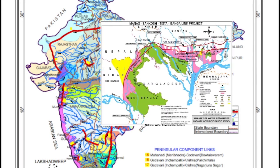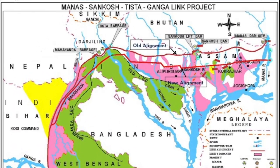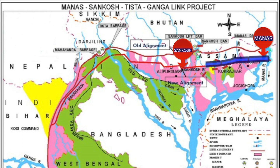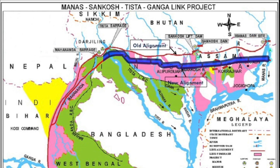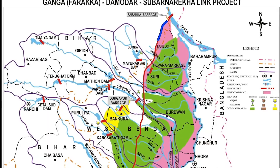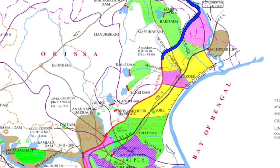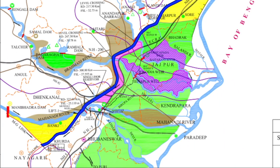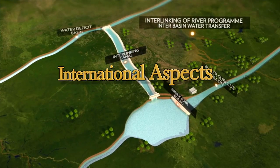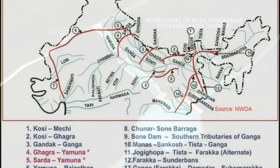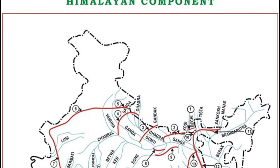The MSTG link project proposes diversion of about 42,000 MCM of surplus water available in Manas, a tributary of the Brahmaputra, and the Sankosh river, with supplementation from intermediate streams Torsha, Raidak, and Jaldakha — for augmenting the flow of the Ganga at Farakka and further transfer through Ganga-Damodar-Subarnarekha and Subarnarekha-Mahanadi links towards the south. The feasibility report is being prepared by NWDA.